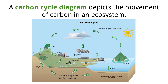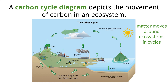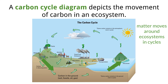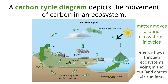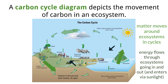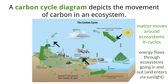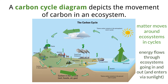When looking at matter in ecosystems, we need to understand that matter moves around in constant cycles, allowing it to be reused over and over. This makes sense because, other than a few random meteorites, our planet does not get any new matter — we have to use and reuse what we already have. This is the opposite of energy, which is constantly entering our planet via sunlight.